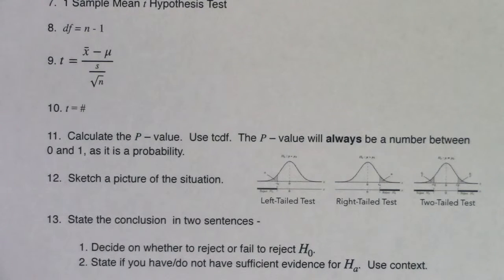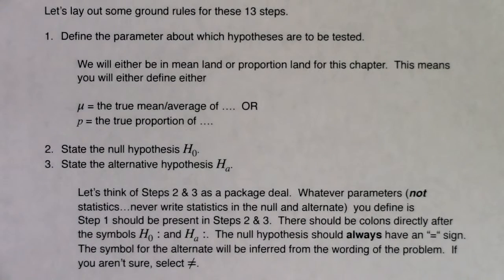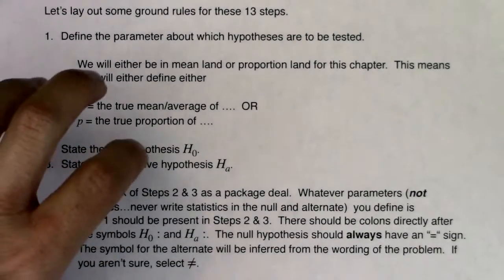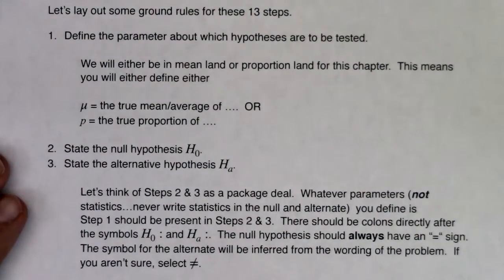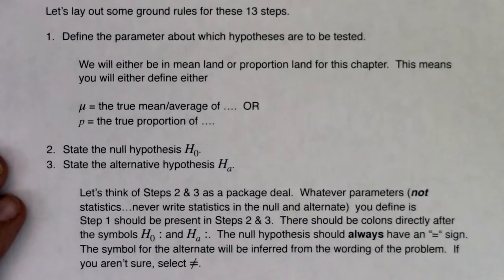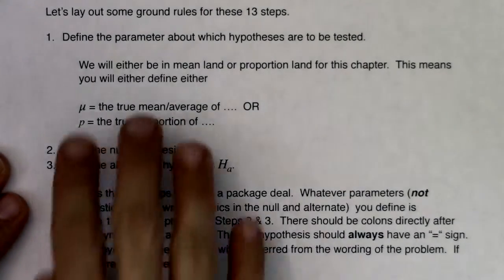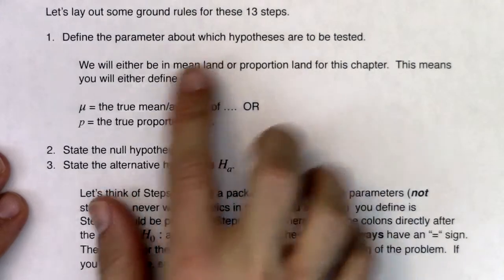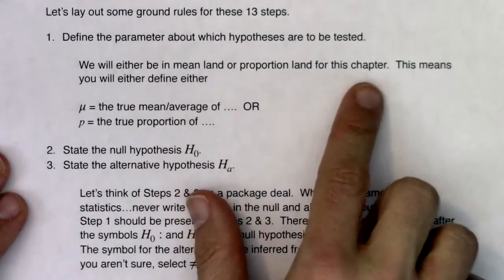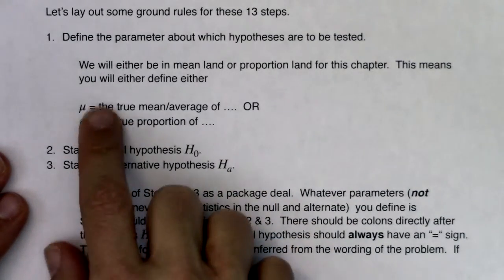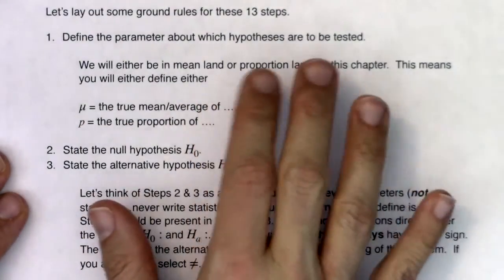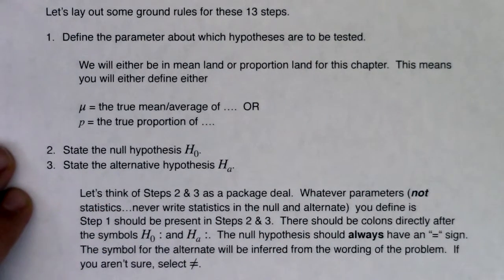Let's get some ground rules under our belt for what the 13 steps are going to look like not only in this chapter, but as we progress. We're going to get hypothesis tests in chapters 9, 10, 11, and 13. This hypothesis test thing is a major idea in stats, so it's not going away — it's with us for the rest of the semester. In step one, you're always going to define your parameter, and you're either going to be in mean land or proportion land, meaning we'll either have a mu or a p. That's the same basic idea in chapter 10, but we will change in chapters 11 and 13.